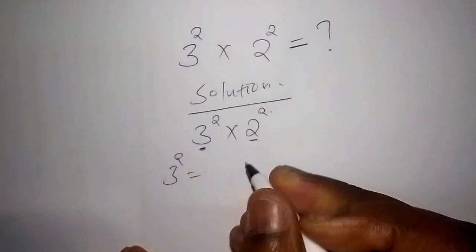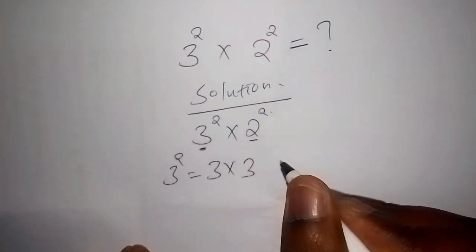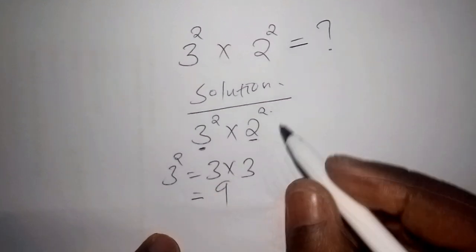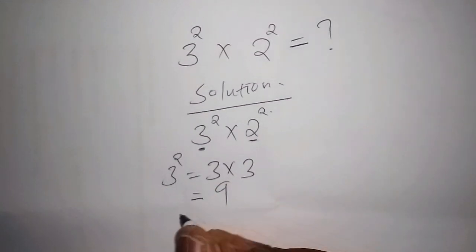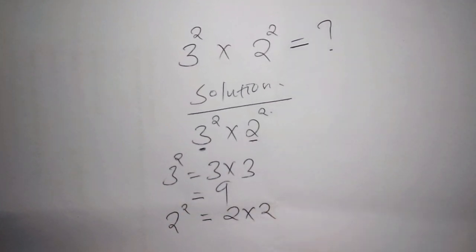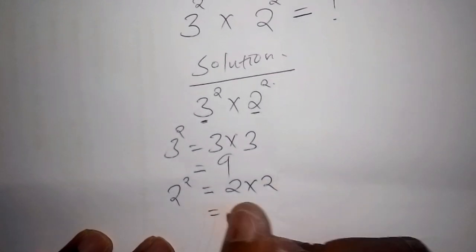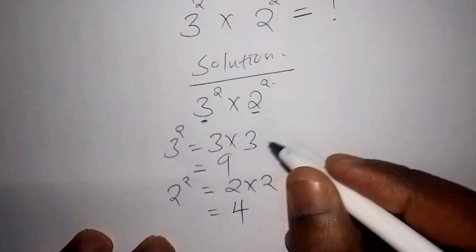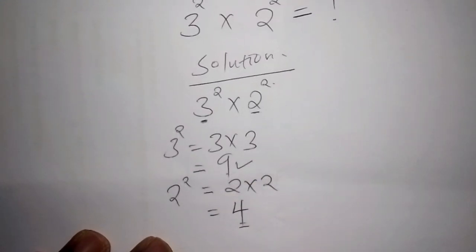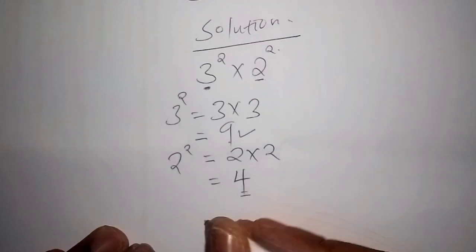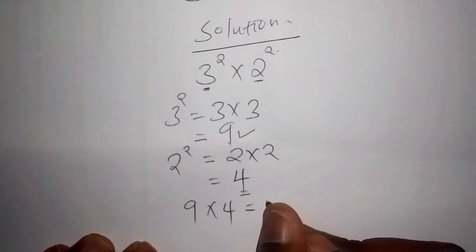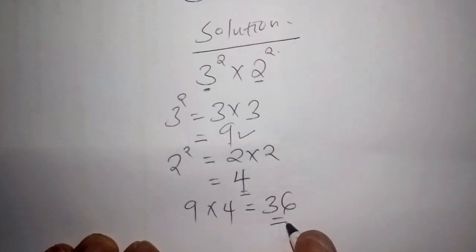What we are going to do is just multiply them out. Three to the power of two equals three multiplied by three, which gives us nine. Then two to the power of two equals two multiplied by two, which gives us four. So now we combine the two: nine multiplied by four gives us 36.